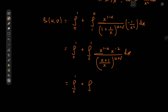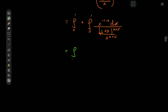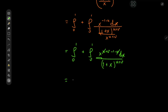So we have integral from 0 to 1 plus integral from 0 to 1 of x to the negative 1 minus u dx divided by 1 plus x to the u plus v divided by x to the u plus v. Multiplying the numerator and denominator by x to the u plus v, we have the integral from 0 to 1 plus another integral from 0 to 1 of x to the u plus v minus 1 minus u dx divided by 1 plus x to the u plus v. That means we have cancellation of u terms and we're left with x to the v minus 1. And recall that the integral from 0 to 1 was the integral of x to the u minus 1 divided by 1 plus x to the u plus v dx.